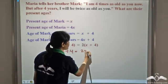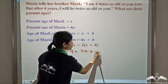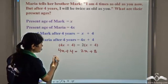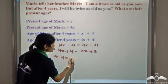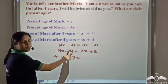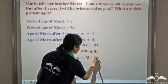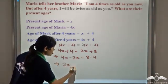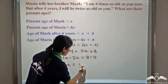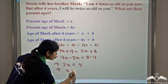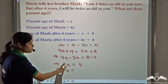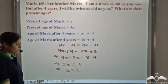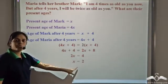Expanding the right side: 2 into x is 2x and 2 into 4 is 8, so we get 4x + 4 = 2x + 8. Transposing 2x to the left side gives 4x − 2x, and transposing +4 to the right side gives 8 − 4. So 2x = 4, which means x = 4 ÷ 2 = 2.